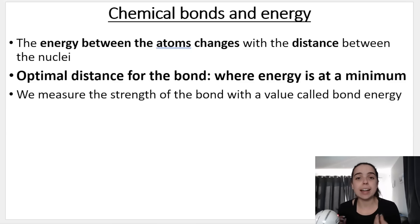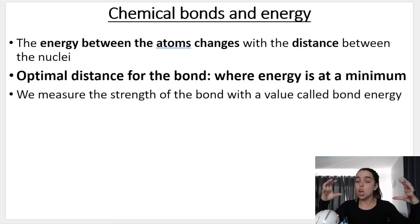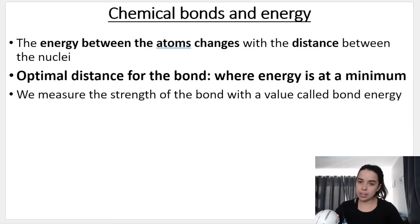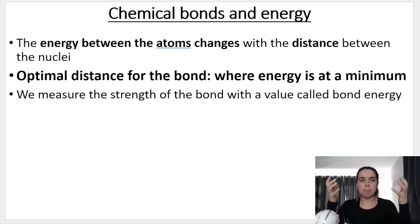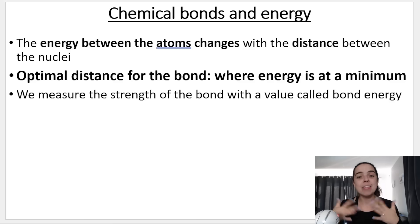The energy between atoms changes with the distance between the nuclei. If atoms are very far apart versus closer together, when the internuclear distance changes, the energy between the atoms changes as well. A bond will happen when the energy is at a minimum. Low potential energy means stable. The optimal distance for the bond - where the bond will form - will be where energy is at a minimum. That distance is called bond length, and the energy released when the bond is formed is called bond energy.